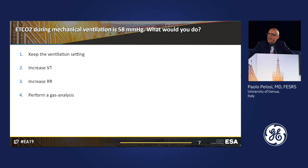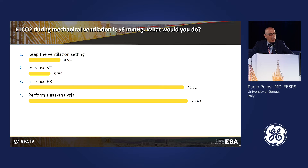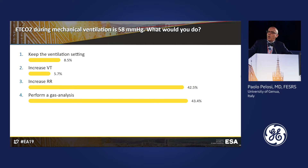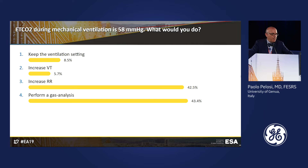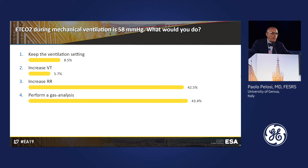We can be more aggressive or less aggressive, as discussed this morning. Almost 50% chose to increase the respiratory rate — they felt an end-tidal CO2 of 58 was quite high. The other group performed a blood gas analysis, probably to have more information about pH and not only CO2. Interesting.